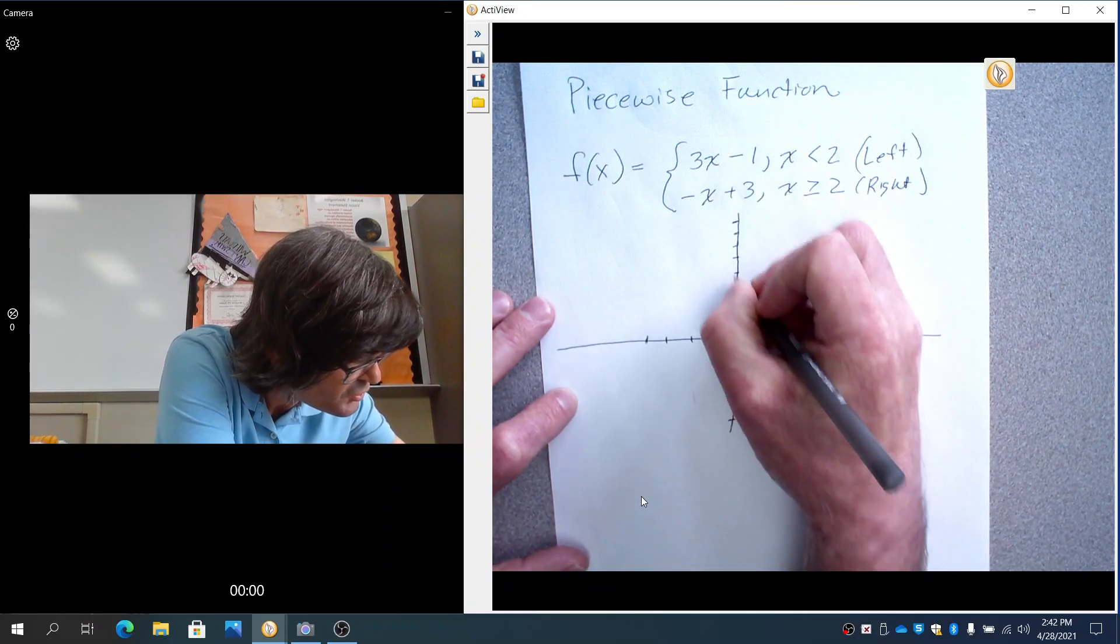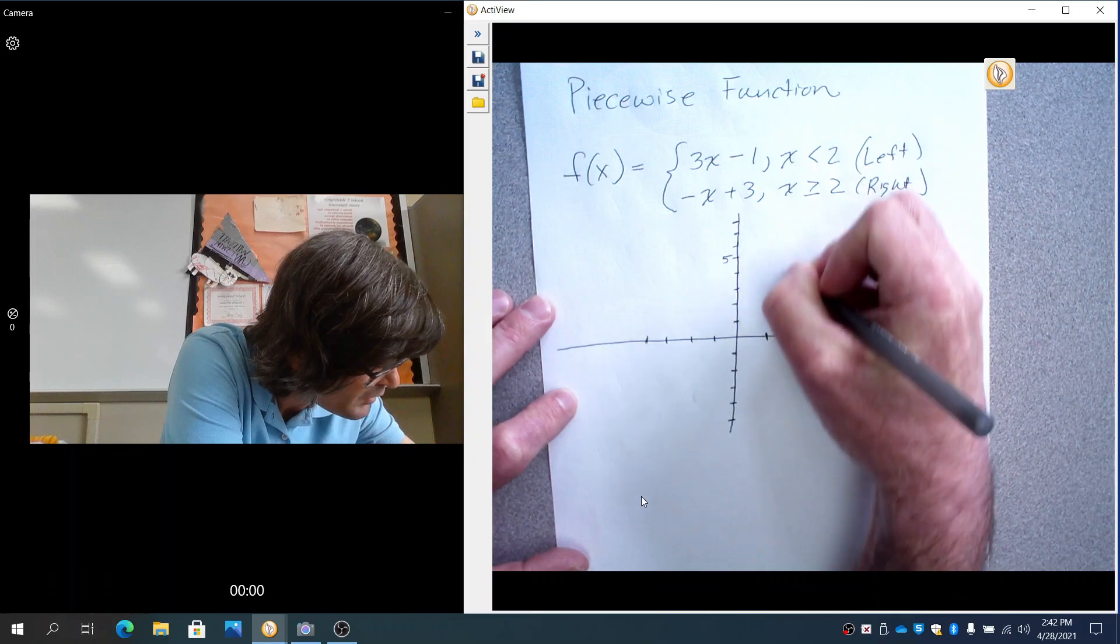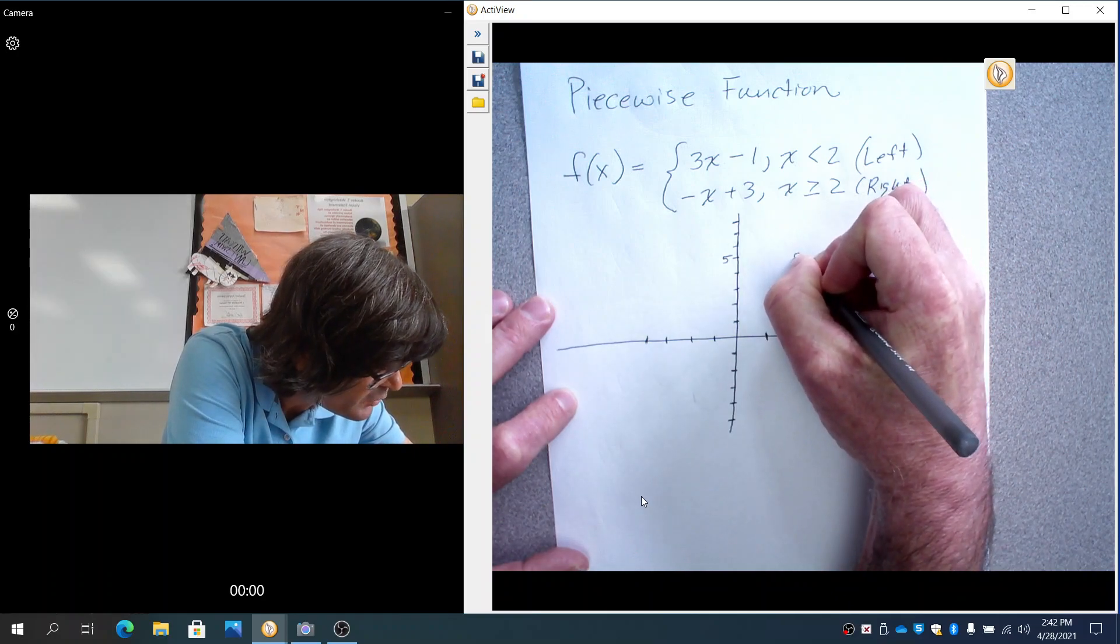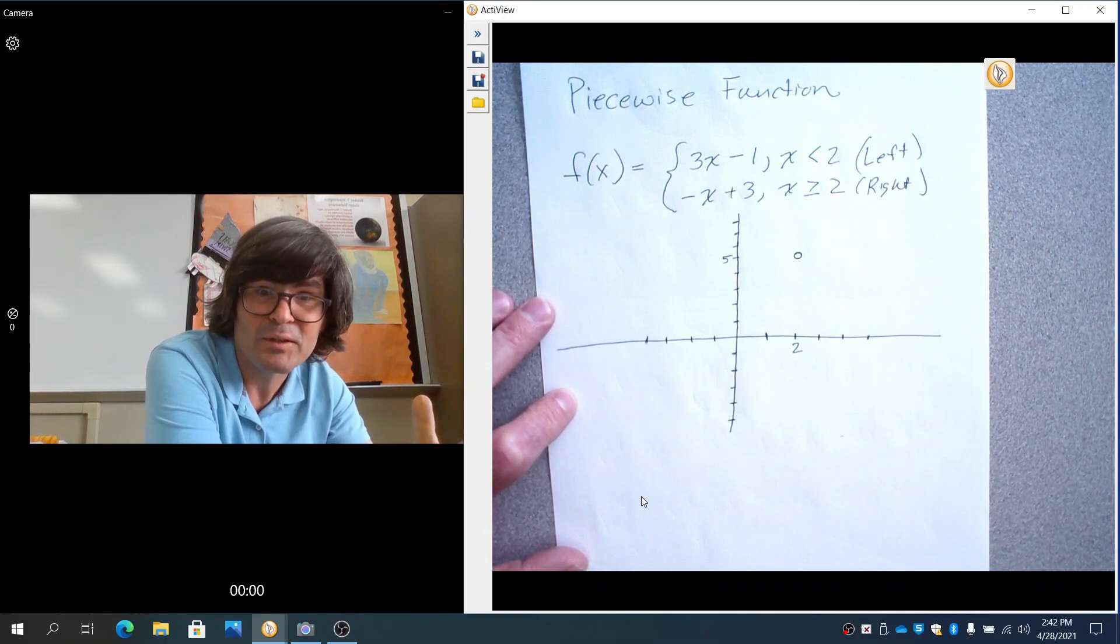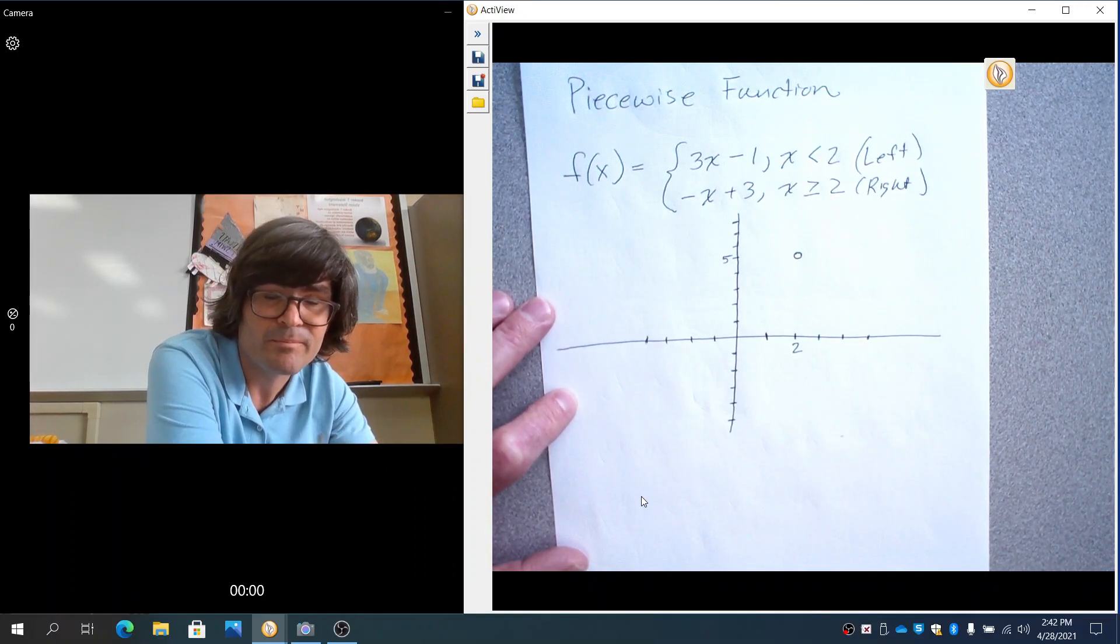I want to pretend that (2, 5) is a point on the graph. I'm going to make a little open circle here. The open circle means that we go right up really close to that point, but don't quite touch it.